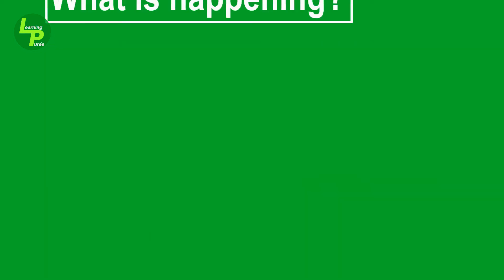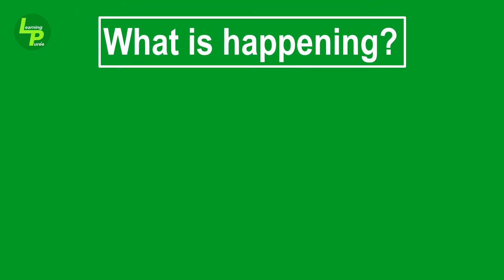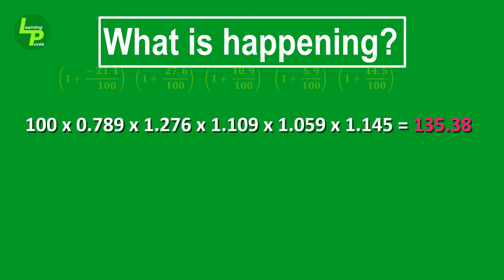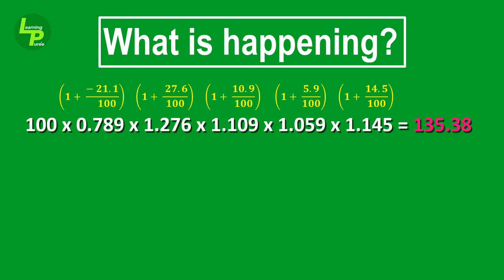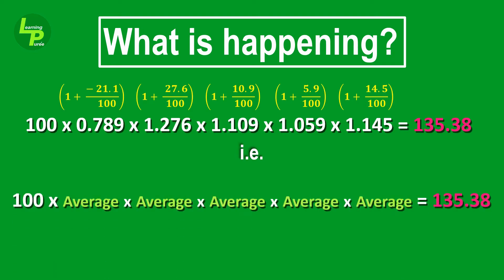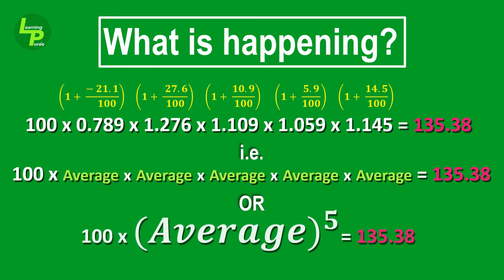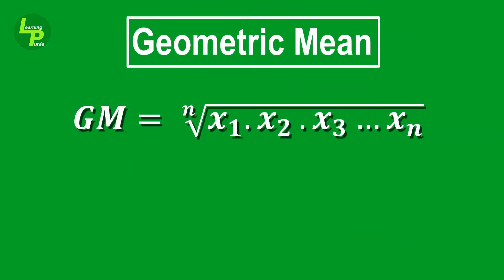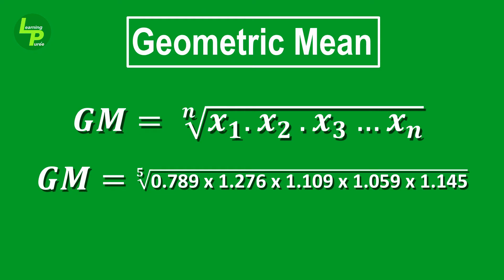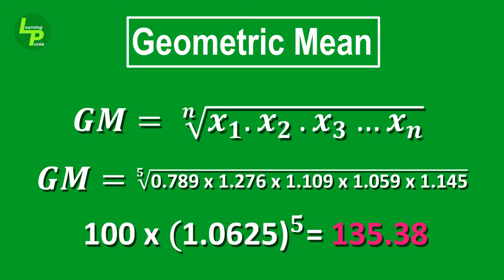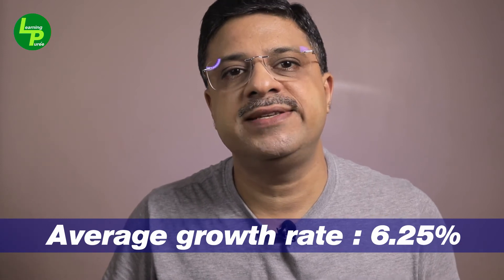Let's first understand what is happening when we were calculating the returns based on percentage rate of returns every year. We were effectively multiplying the rate of return for each year in a cumulative manner to yield the figure of $135.38 at the end of the 5th year. Therefore, what we need to find is a single constant figure with which the initial investment needs to be multiplied for each year. This is achieved by using a geometric mean — obtained by multiplying all the percentage rate of return numbers together and taking the nth root of the product of those n numbers. In our case, it is the 5th root of the 5 numbers. Doing so gives us the geometric mean as 1.0625, yielding the final amount and providing the average growth rate of 6.25% for the investment.